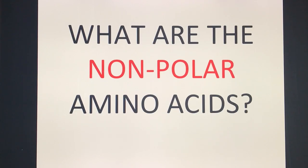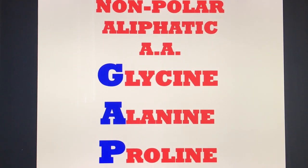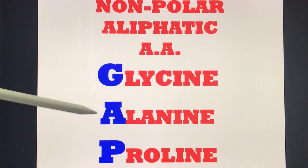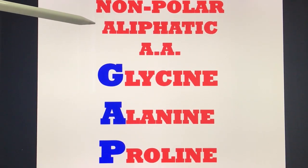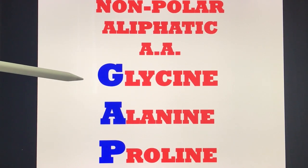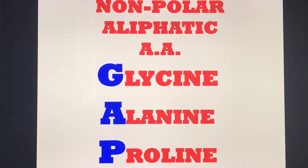What are the non-polar amino acids? The non-polar aliphatic amino acids are Glycine, Alanine, and Proline — highlighted as G-A-P. So your mnemonic summary: branched chain amino acids is LIV, basic amino acids is HAL, and non-polar aliphatic amino acids is GAP — Glycine, Alanine, and Proline.